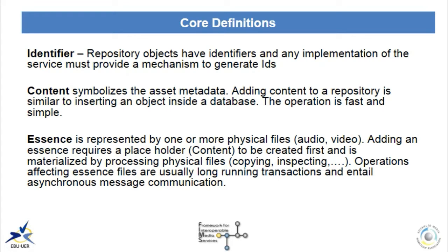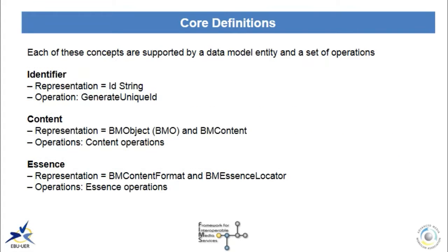Operations affecting essence files are usually long-running transactions and they require asynchronous message communication. This is a distinctive aspect of FIMS — taking into account what is specific to media. Each concept is supported by a data model entity and a set of operations. For identifiers, the representation is an ID string and the operation is the generate unique ID operation. For content, the representation is the BMO and BMContent objects. For essence, the representations are the BMContentFormat and BMEssenceLocator objects. You can look at the FIMS API documentation for a detailed description of all object structures and attributes.